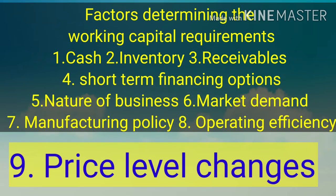Ninth is price level changes. If prices are on an increasing trend, we need more working capital for the same quantity of production. For example, if raw material prices increase from 50 to 55 and we are keeping 1,000 units, our investment will increase from 50,000 to 55,000 without increasing the level of activity.